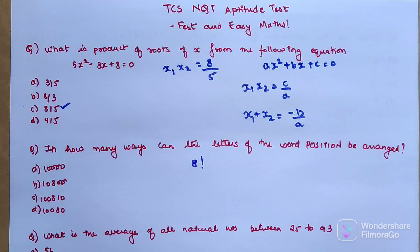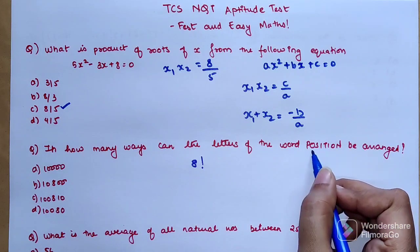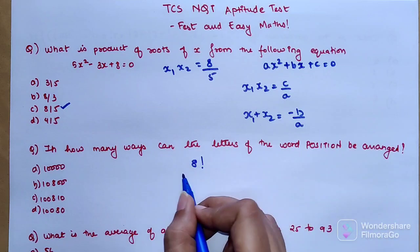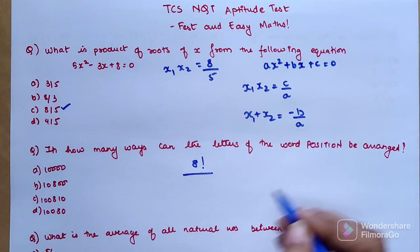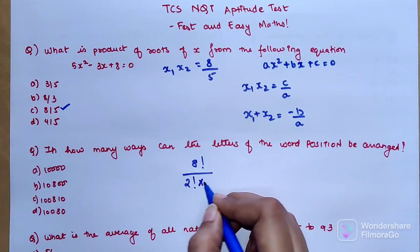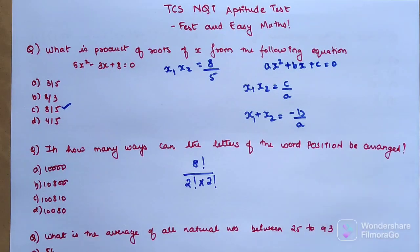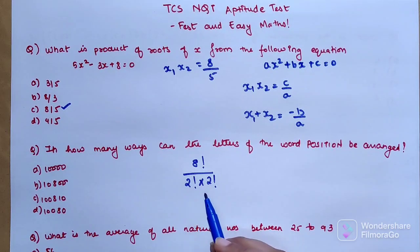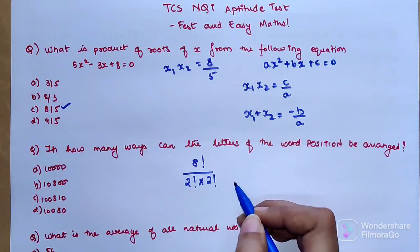If all the letters were different, the answer would be 8!, but here letter O is getting repeated twice and letter I is also getting repeated twice. So you divide by 2! for the O letter and divide again by 2! for the I letter. Your numerator is 8! and denominator is 2! × 2!.